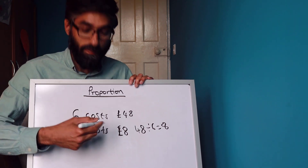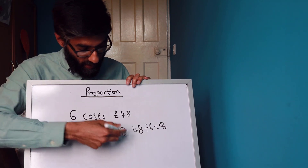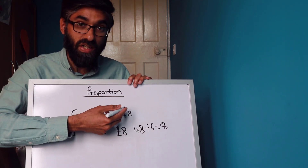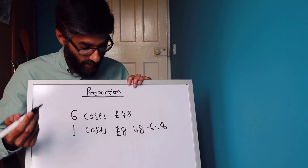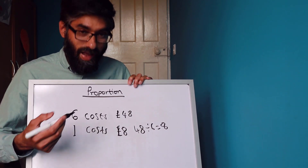The cost of one ticket: six times eight is 48, and you can check your answer just like that.